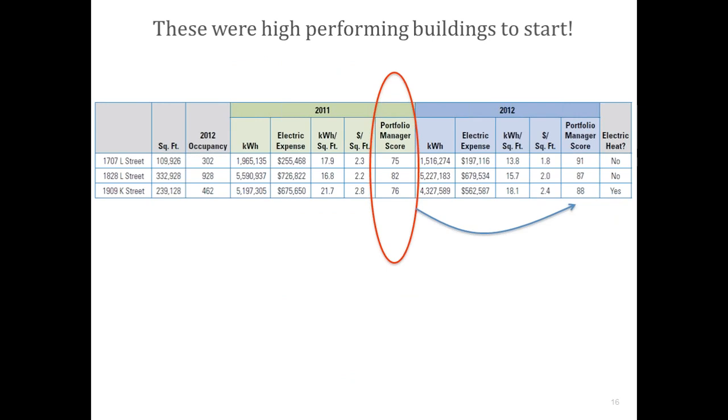I'll also note that 1828, the building that had a 7% savings, it's the largest of the three buildings and had a brand-new chiller, I think it was two years before our study began. So the opportunities to save there, you would think, would have been much lower, and they were lower than the other buildings, but still substantial.